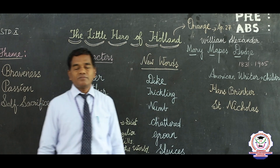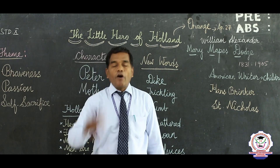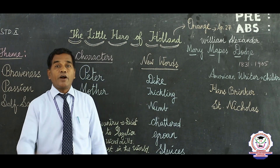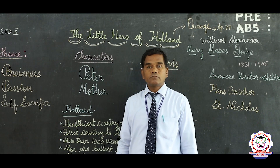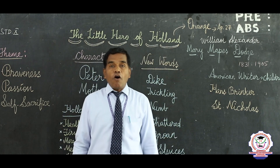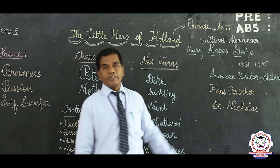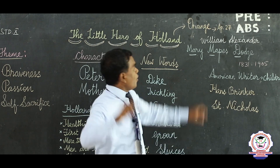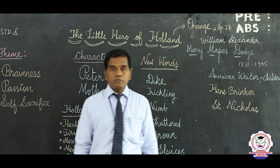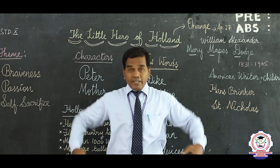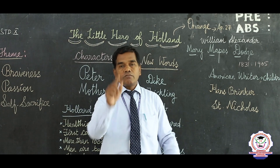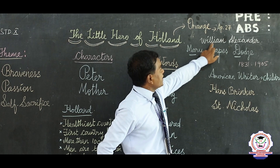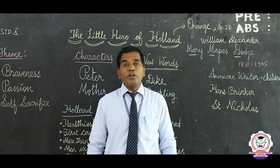Next — Holland. Where is Holland? The other name of Holland is Netherlands. The national color of Holland is orange. Every year on April 27th, all the citizens of Holland wear orange-colored dress. That day is the birthday of the great King William Alexander.